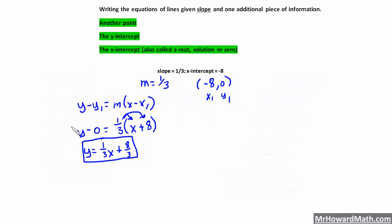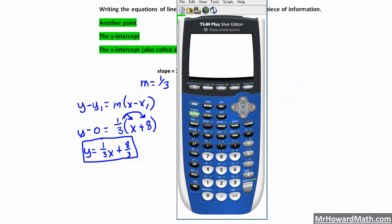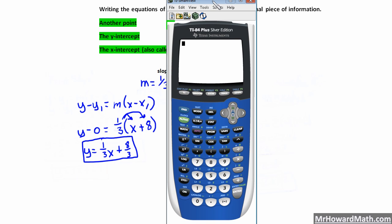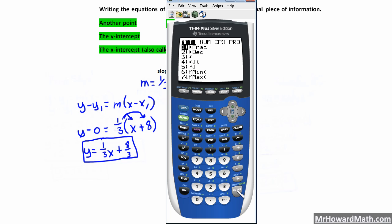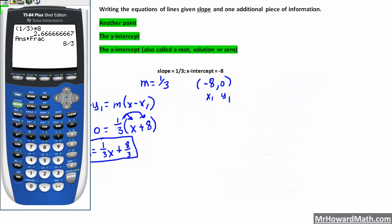Let's pull up the calculator. If you weren't sure what 1 third times 8 was, put fractions in parentheses: parentheses 1 third times 8. That gives 2 and 2 thirds, or 2.6 repeating. If you're unsure what that is as a fraction, use Math, Enter, Enter to convert — and that gives us 8 thirds, which is what we got.